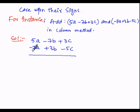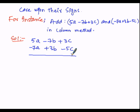Here 5a and 7a are like terms. We have arranged both expressions row-wise such that like terms fall under the same column — first column, second column, and third column. Now adding: 5a is positive and 7a is negative. Plus into minus is minus, so we subtract: 7 minus 5 is 2a. Since 7 is greater and its sign is negative, the result is minus 2a.